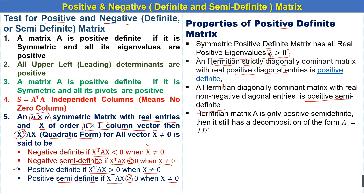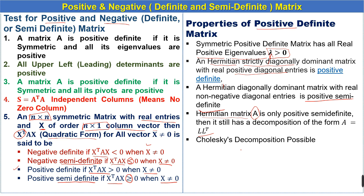Fourth, if a Hermitian matrix A is positive semi-definite, it still has a decomposition of the form A equals L times L-transpose, meaning we can apply Cholesky decomposition to this matrix. The Cholesky decomposition is possible when the given matrix is a positive definite matrix.